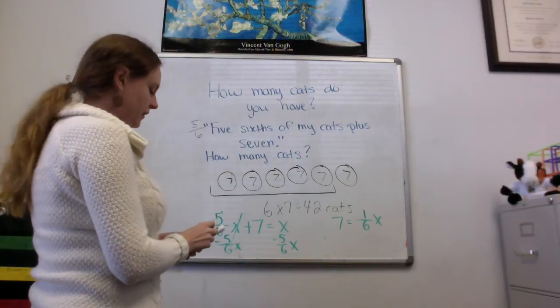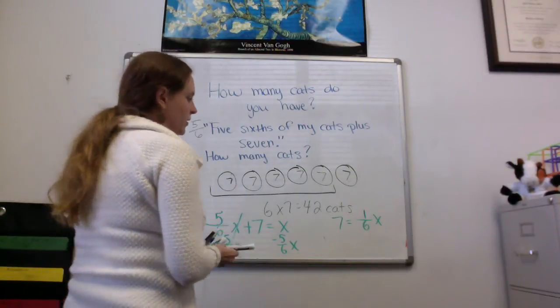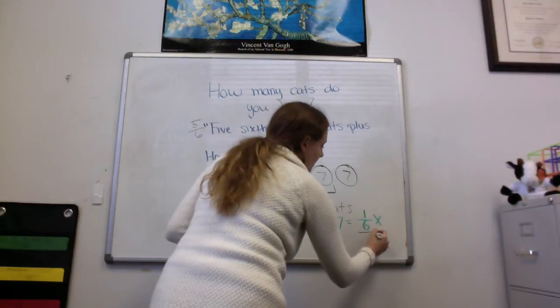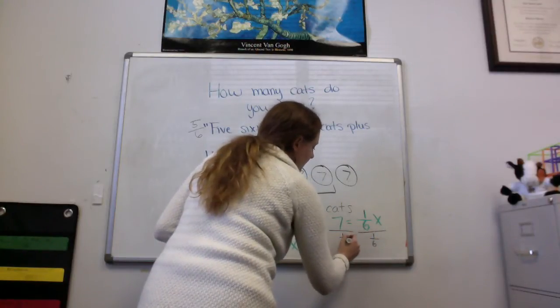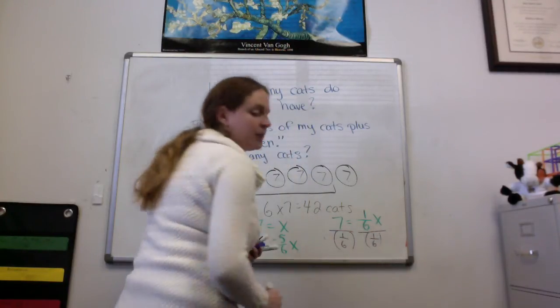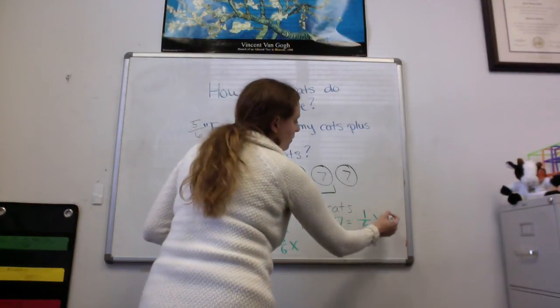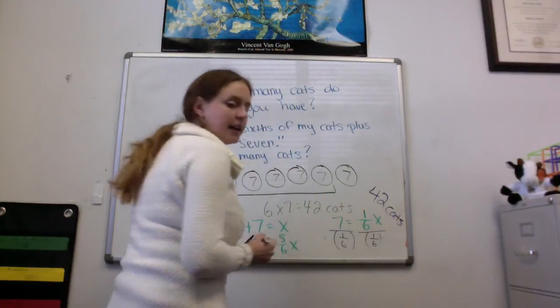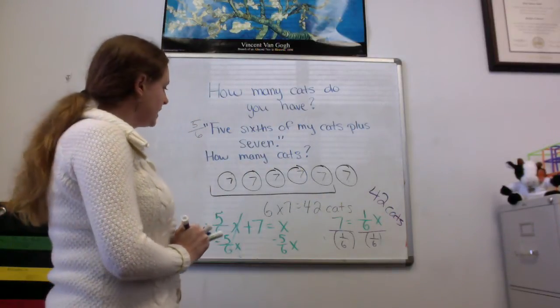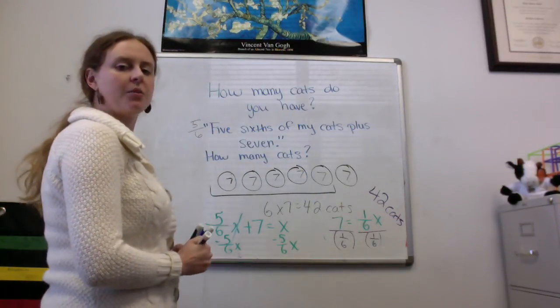I need to still solve for x. So I will divide everything by 1/6. Put that in parentheses when I'm typing in my calculator. And this is also going to give me 42 cats. Either way works if you're a visual person or an algebraic person.